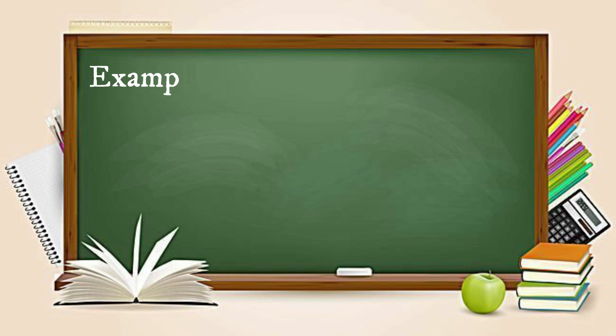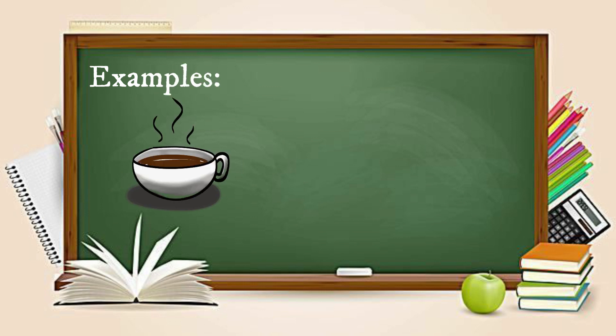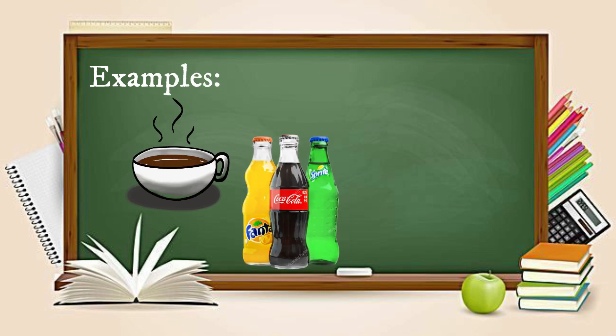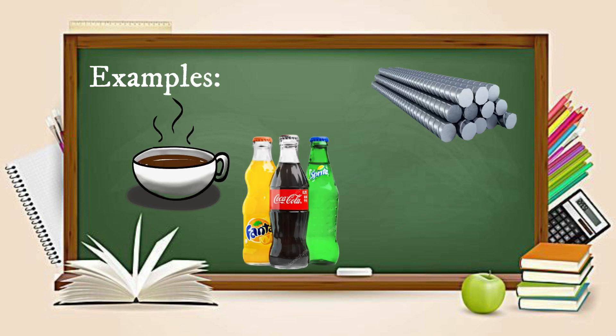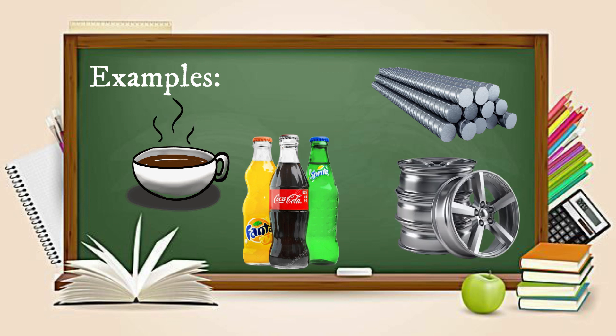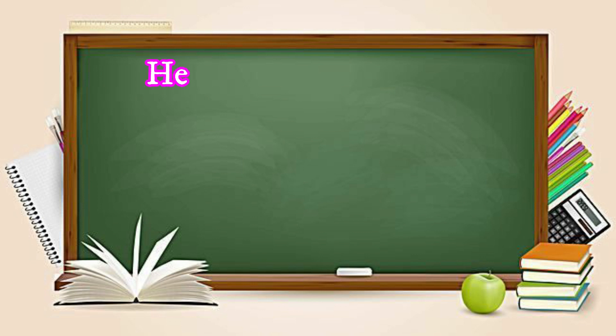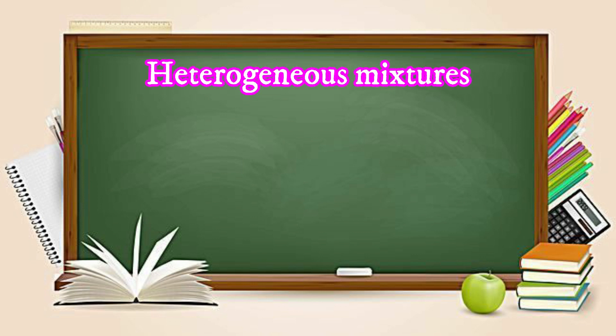Some examples of homogeneous mixtures are coffee, soda, steel bars, and alloy. Now let's talk about heterogeneous mixtures, also called non-uniform mixtures.